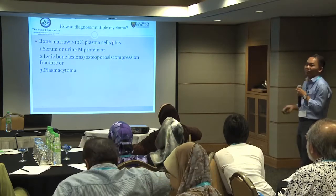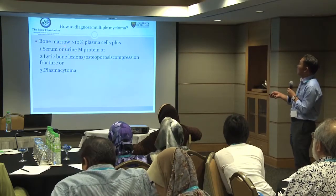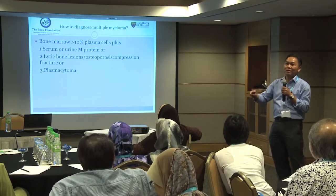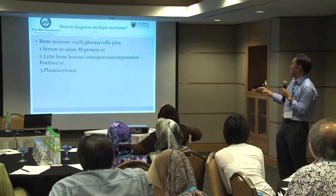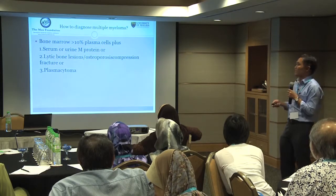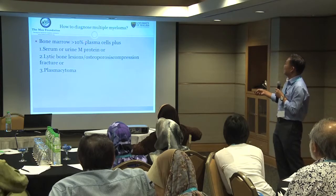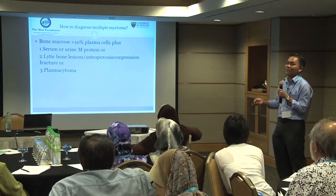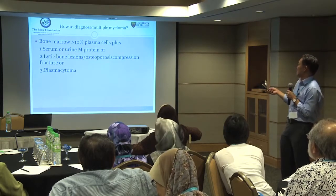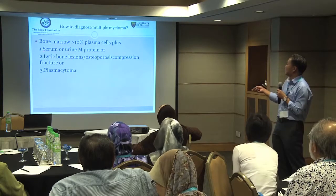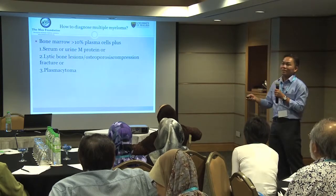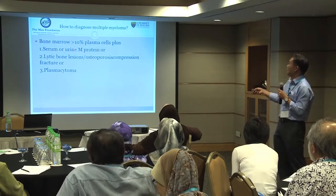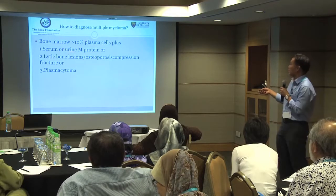How do you diagnose multiple myeloma? First, you need to have abnormal plasma cells in the marrow. To diagnose multiple myeloma, 100% of the time we need a bone marrow examination to look at the abnormal plasma cells. We also check for M protein — monoclonal globulin — from the blood or from the urine. The protein is so much it can be excreted into the urine, and we can detect this protein by collecting urine over 24 hours.